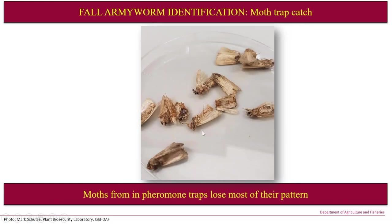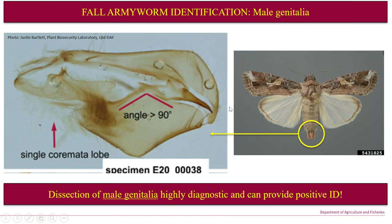Bear in mind there are other moth species with very similar-looking wings. If you're using pheromone traps, this is what your moths will probably look like, so the wing patterning is essentially useless in this context. However, pheromone traps are strongly attractive to males, and the males are very easy to identify based on a relatively straightforward genitalic dissection. If the male genitalia are removed, the entire body is soaked in 10% potassium hydroxide for a small period of time at a heated temperature. One of the valves is a very distinctive shape, unlike any other moth you're going to come across that could potentially be Spodoptera frugiperda.